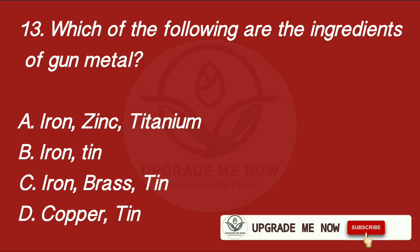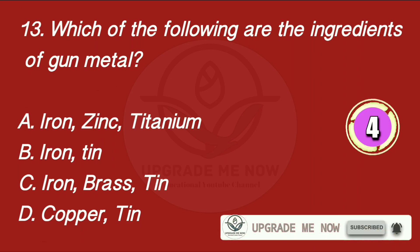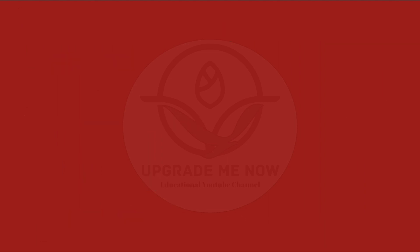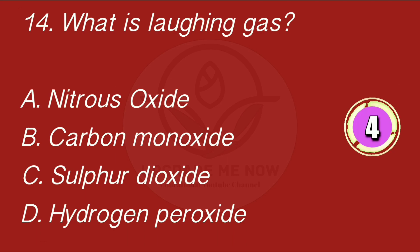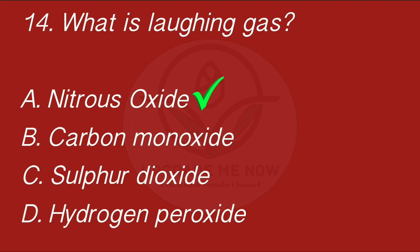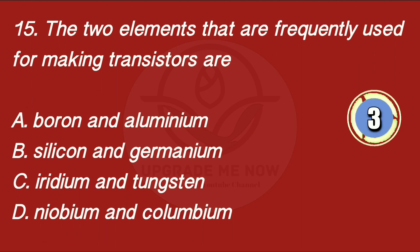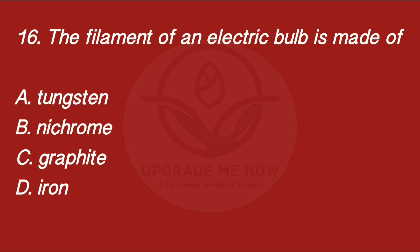Which of the following are the ingredients of gun metal? What is laughing gas? The two elements that are frequently used for making transistors are? The filament of an electric bulb is made of?